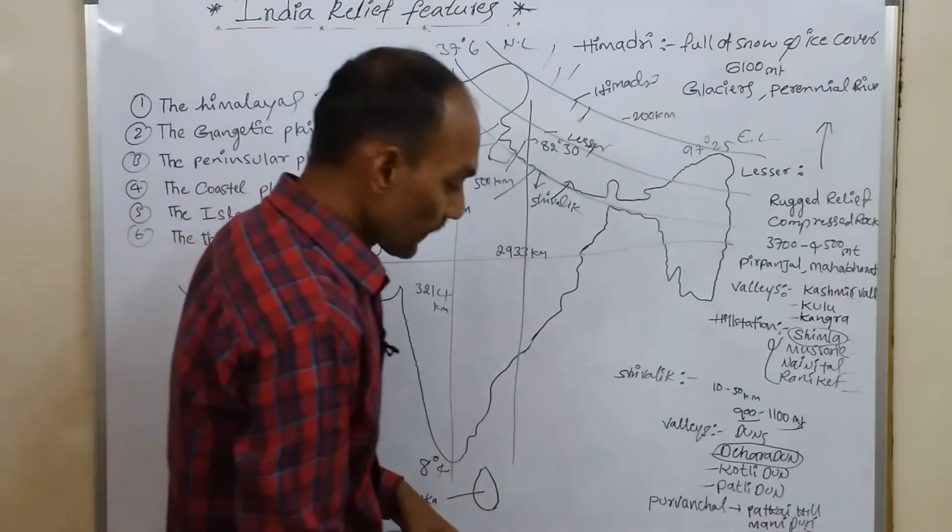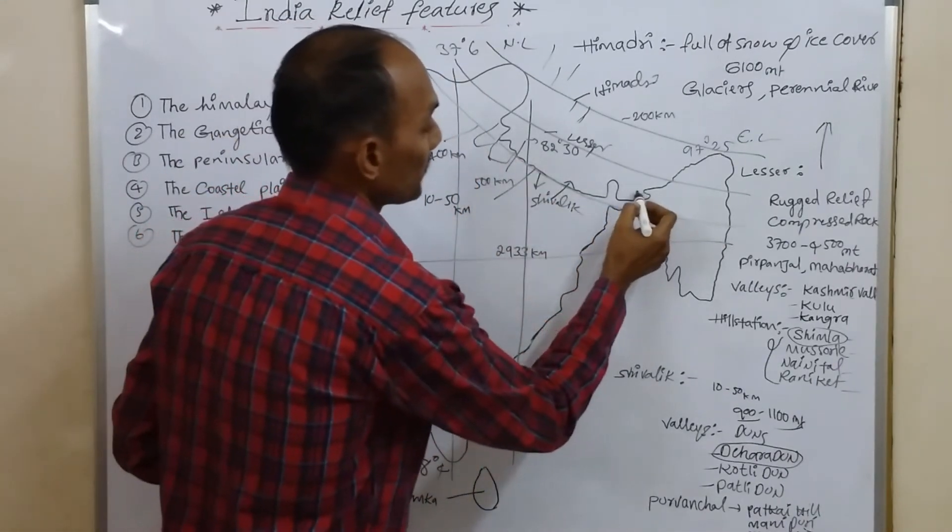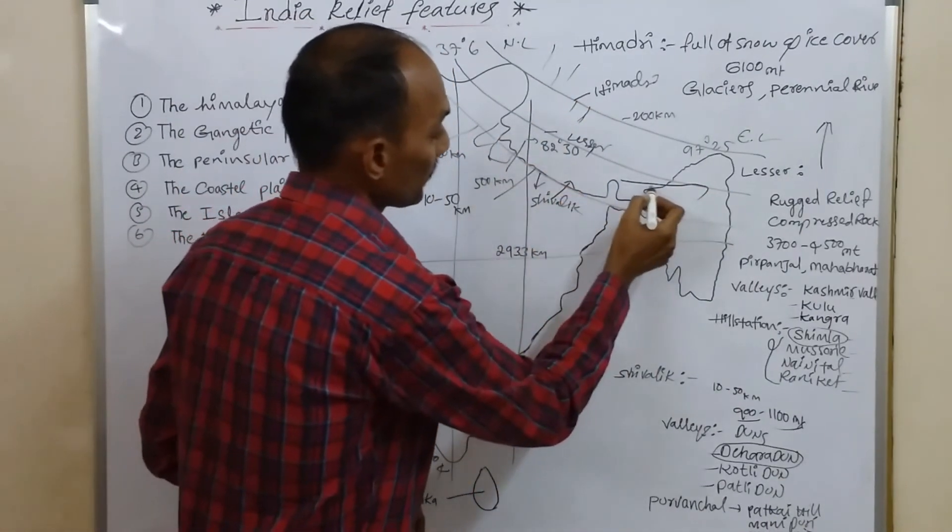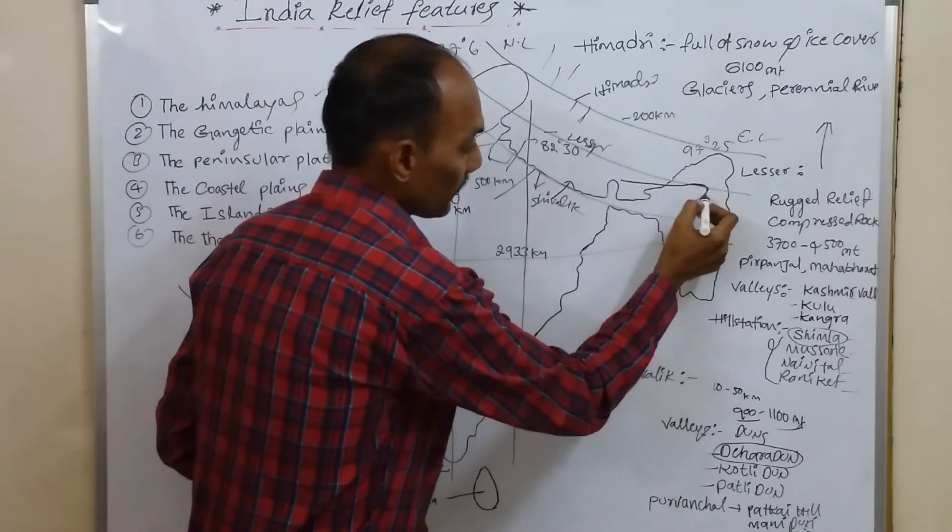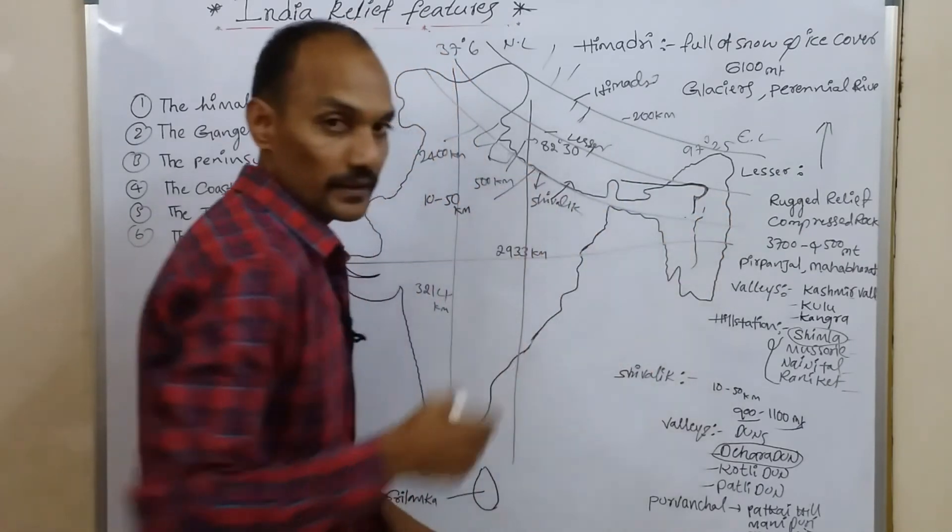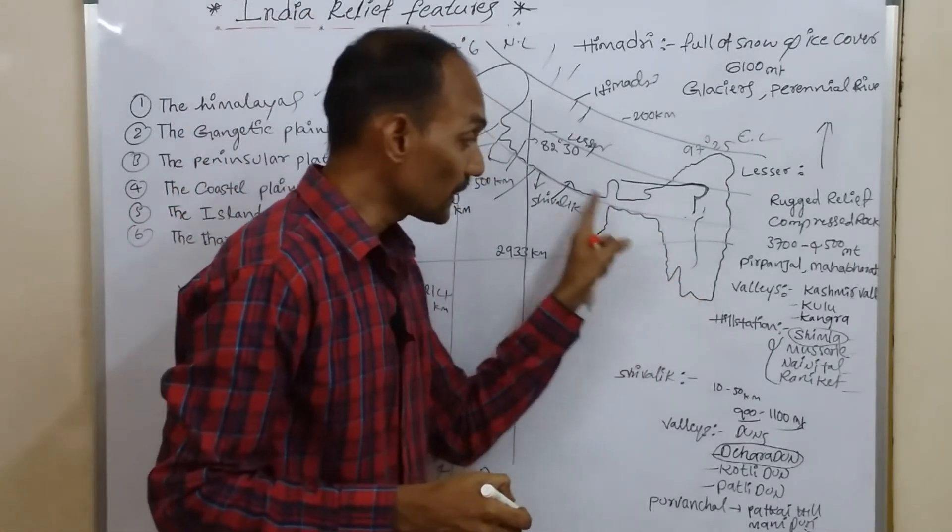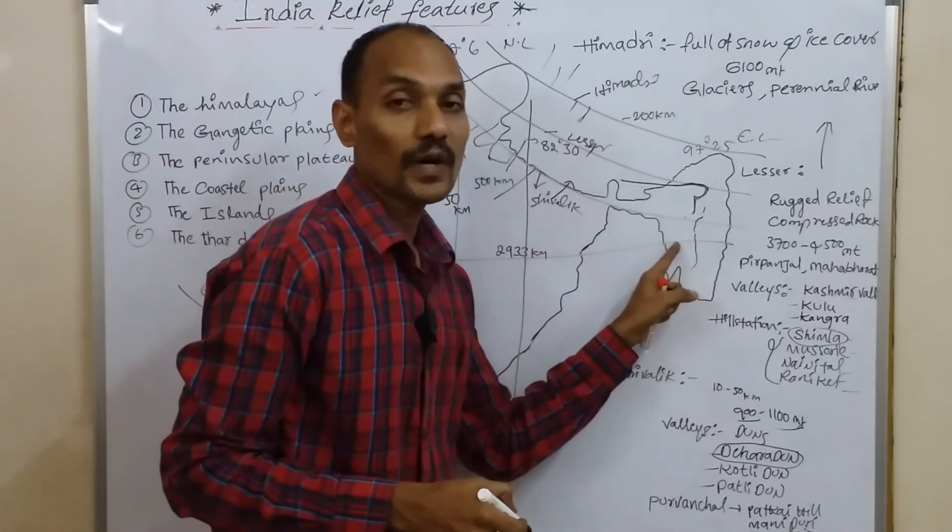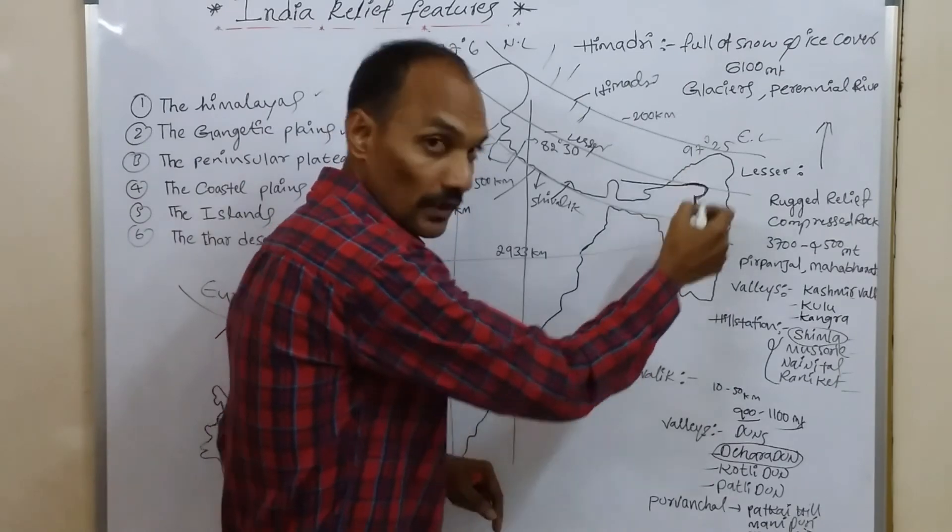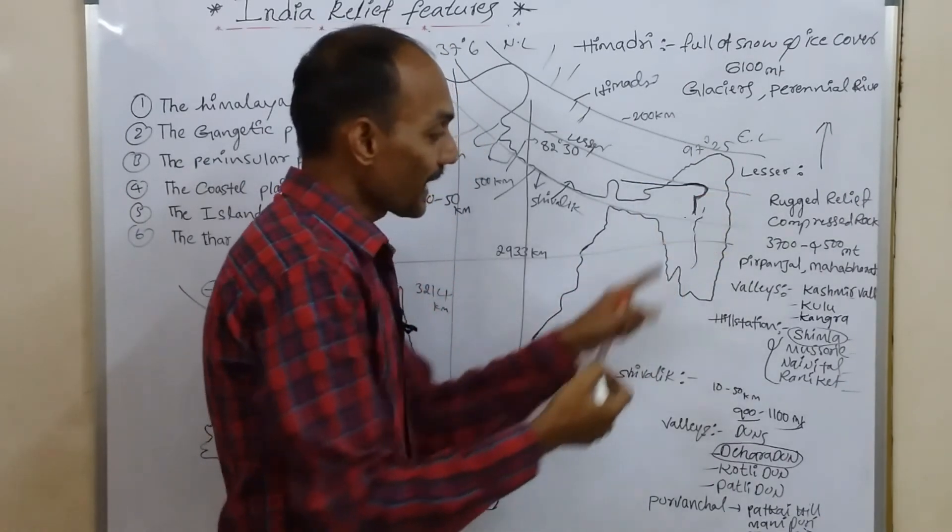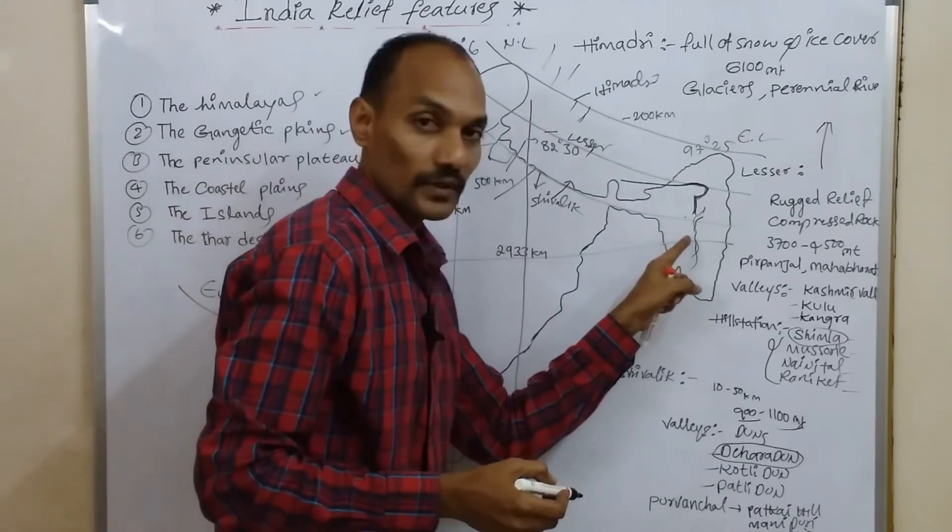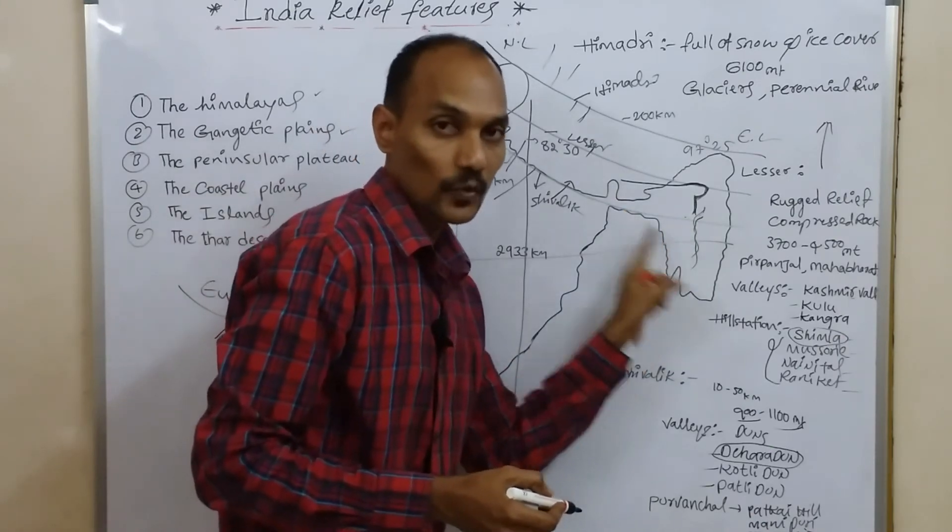These Himalayas take a hairpin bend in Arunachal Pradesh. Hairpin bend means taking a U-turn to the southeastern states and spreading to all northeastern states. In this region, these Himalayan ranges are called Purvanchal Ranges. They take a U-turn to the south in Arunachal Pradesh, beyond the Brahmaputra, and then spread into all eastern states. This region is called Purvanchal.